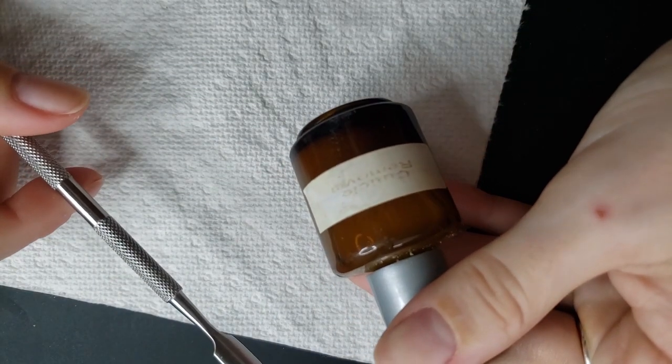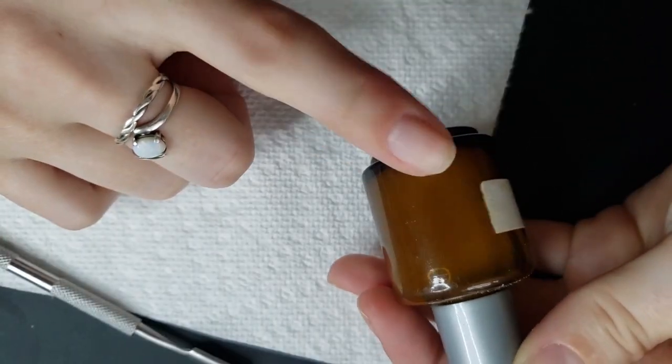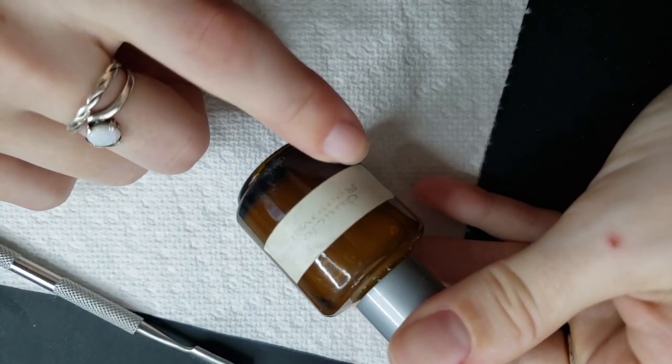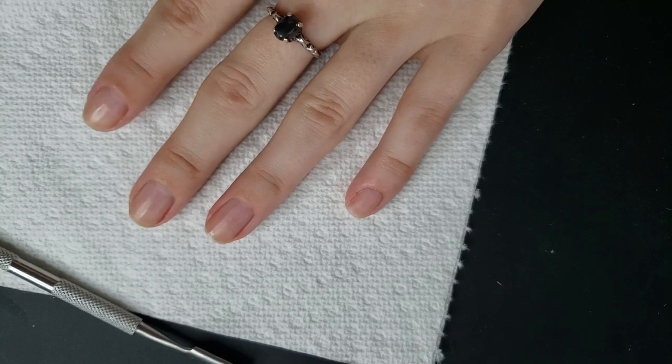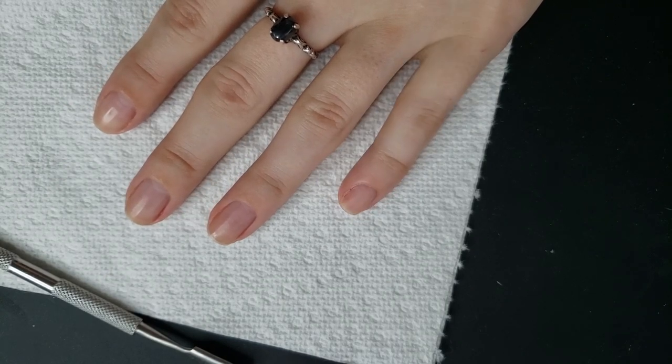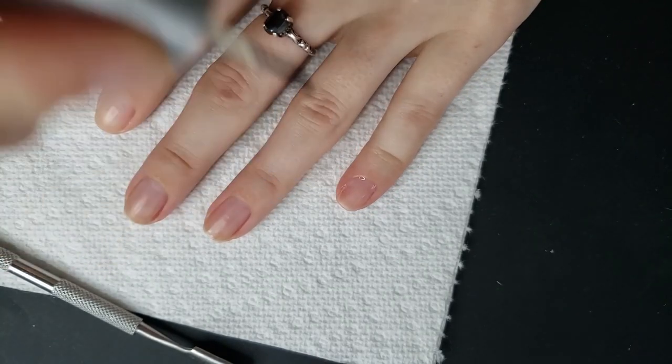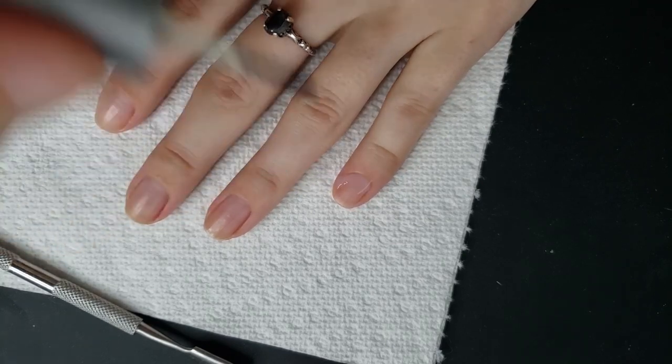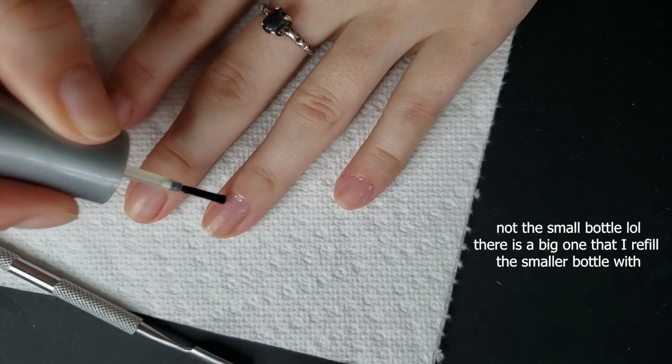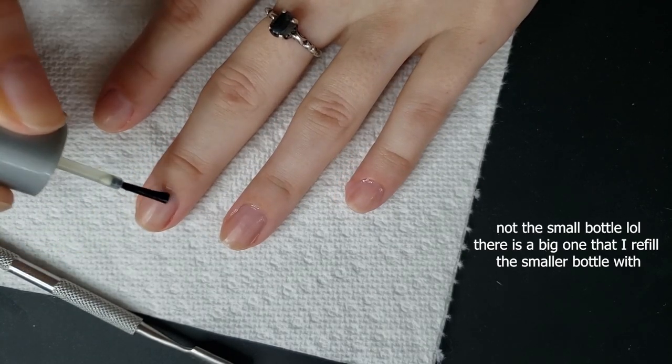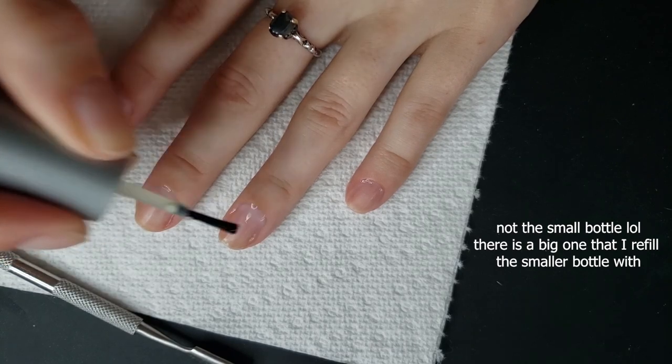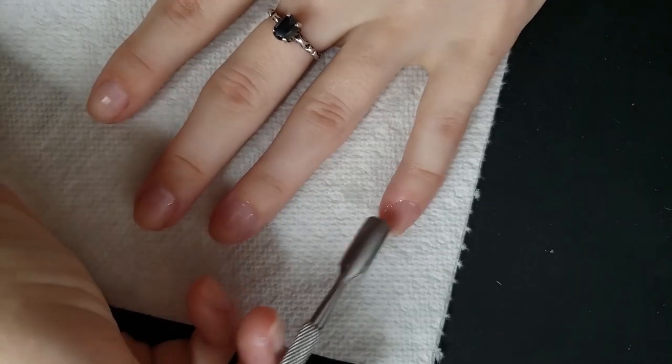Next up is going to be cuticle remover. I just have this empty polish bottle that I put mine in and labeled it forever ago. This is the Blue Cross. I think it's linked in my Amazon. I don't love it, and I don't think that it's cruelty-free, but I have literally had this bottle for seven years. So that's why I'm still using it.